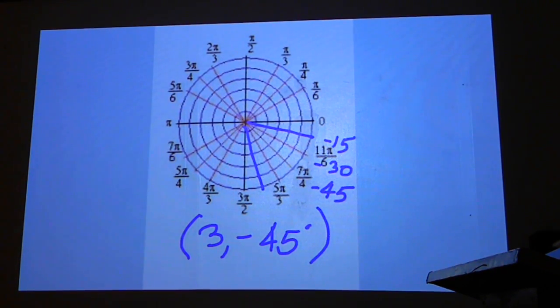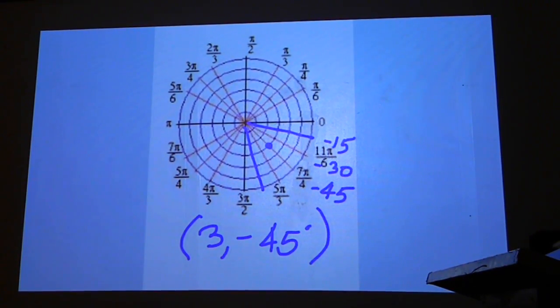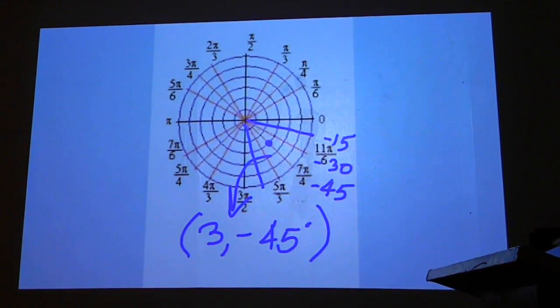So we're going to count out from the center: one, two, and then three. That dot represents this point, three and negative 45 degrees.